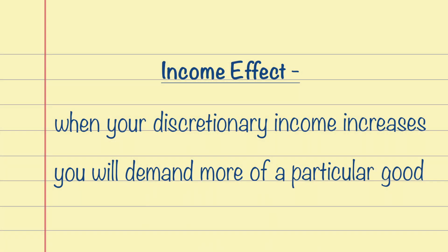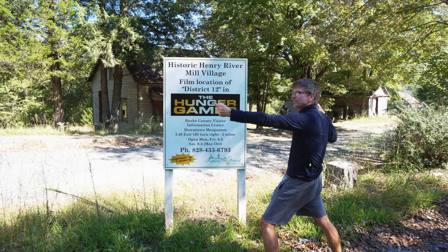Some people collapse the income effect under the umbrella of the substitution effect. The income effect is clear and very easy. It says that when your discretionary income increases, you'll demand more of a particular good. For example, if I am making $20,000 a year and I get an increase to $40,000 a year, I will probably demand more gas — maybe I'll go on a summer vacation and take my family somewhere, burning gas and enjoying my life.